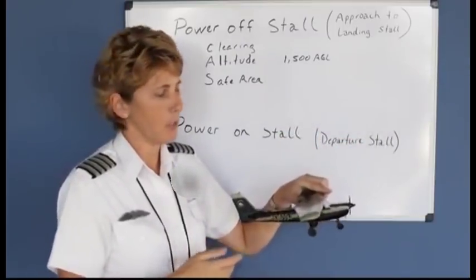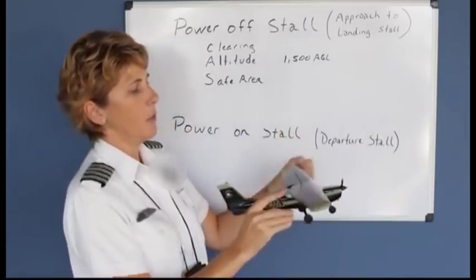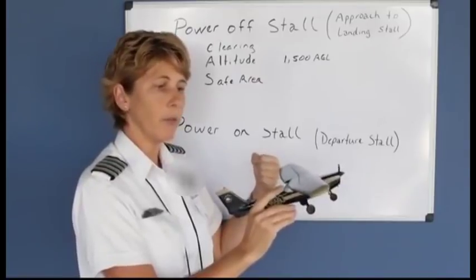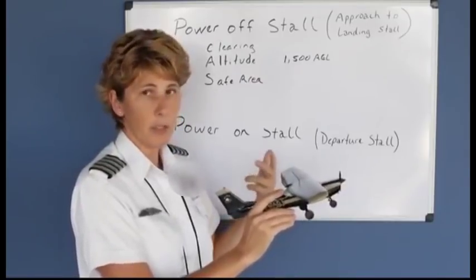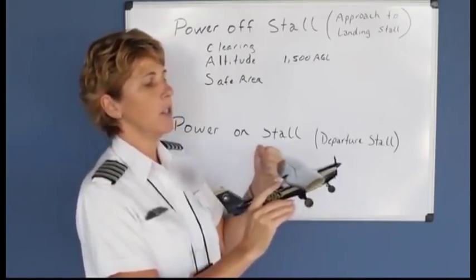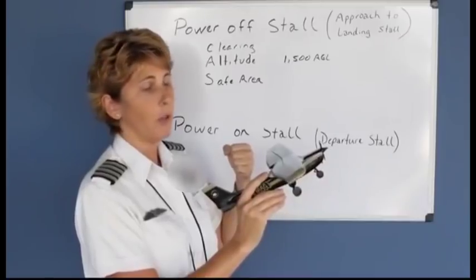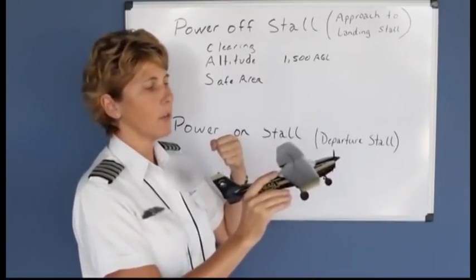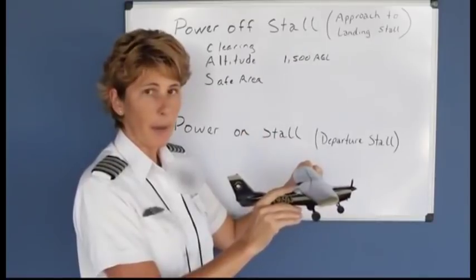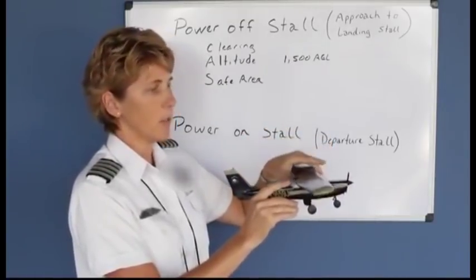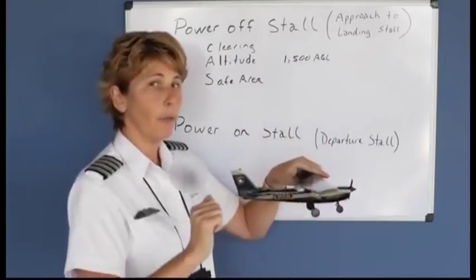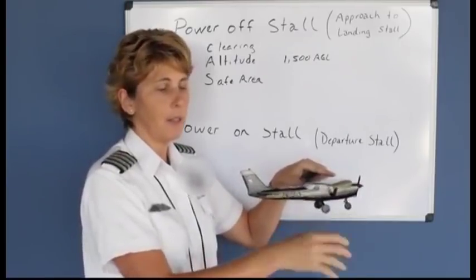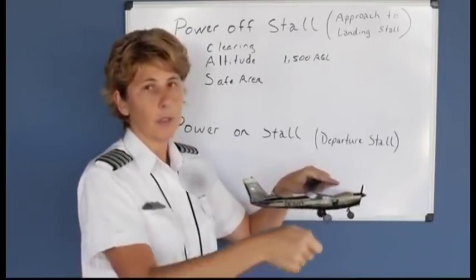To review the recovery procedure: as you pitch up and hear the stall warning or feel the buffet, say 'imminent stall.' Continue holding the nose up until it full stalls. As soon as it full stalls, simultaneously release back pressure to a level pitch attitude, go full throttle with right rudder, push the carburetor heat in, and retract your flaps.